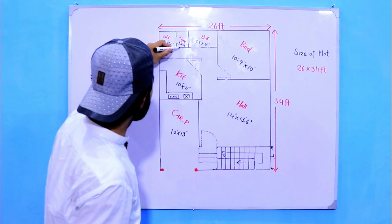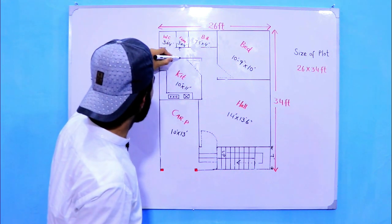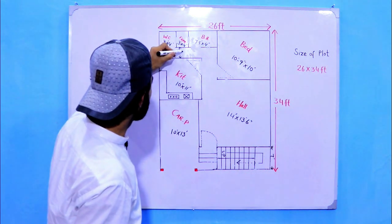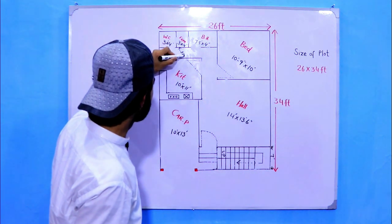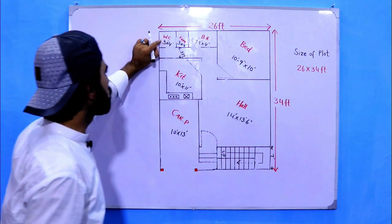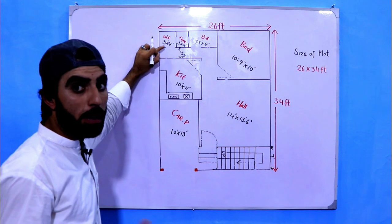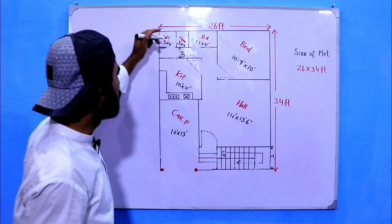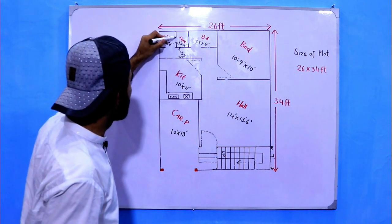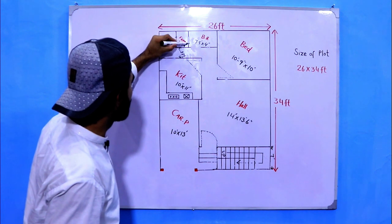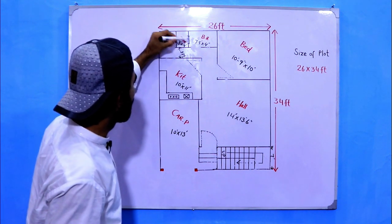Now you can see this is also way which is 3 feet. This one is water closet which size is 3 feet by 4 feet and this is free especially for ventilation.